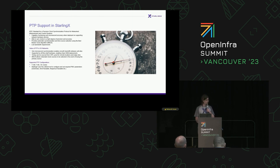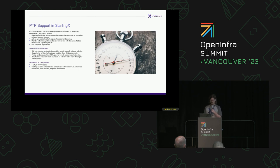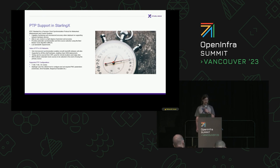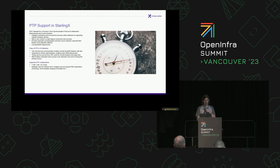Some of the good features that StarlingX helps out with: it supports TGM, TBC, and ordinary clock types, which are all different types of PTP clocks. StarlingX also uses its CollectD tool to set various parameters that are expected in PTP messages, something that the open-source Linux PTP project doesn't provide on its own.